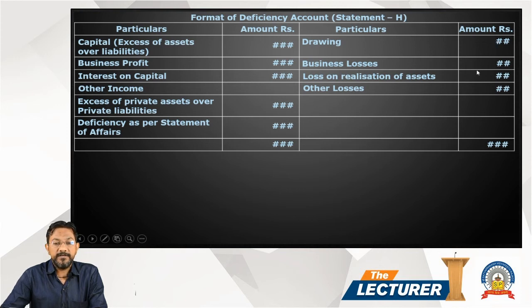On the right-hand side: drawings, business loss, loss on realization of assets, and other losses. So all the deficiencies are brought together on this side.